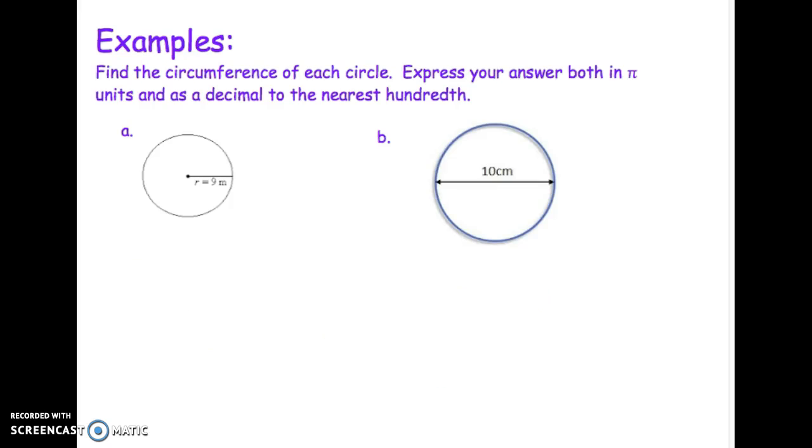We're going to do a couple examples. Your task is to find the circumference of each circle. You're going to express your answer both in π units, which we'll talk about, and also as a decimal to the nearest hundredth. So two decimal places is what I'm looking for.